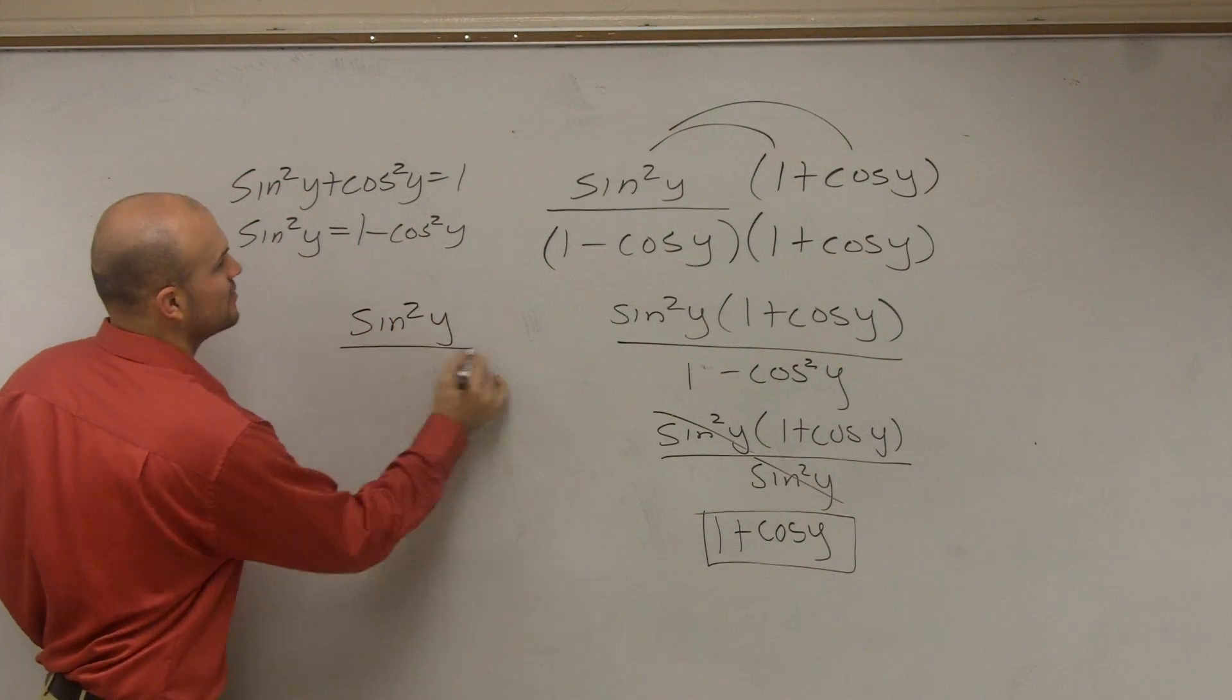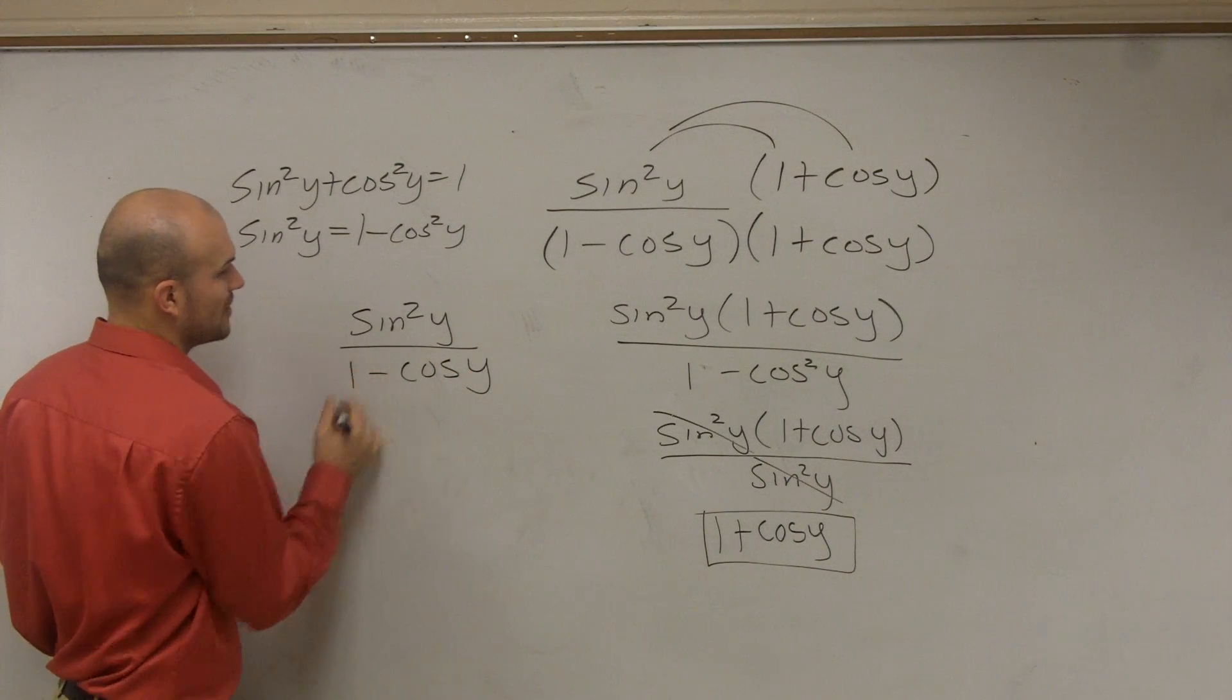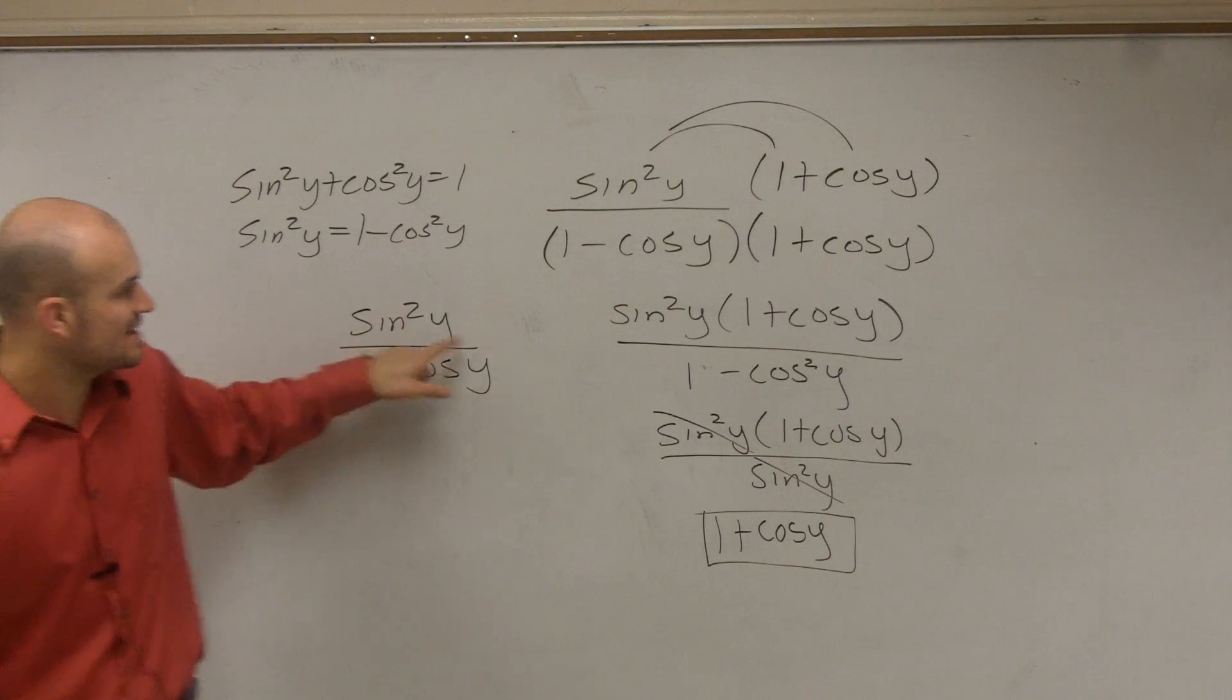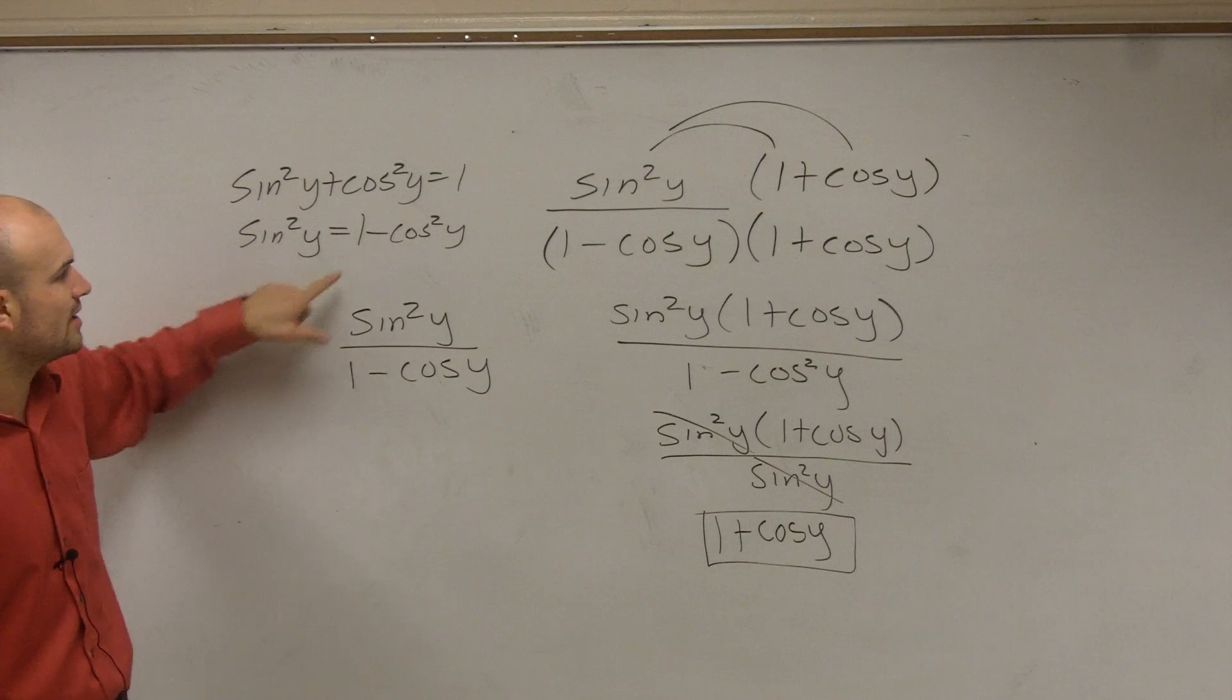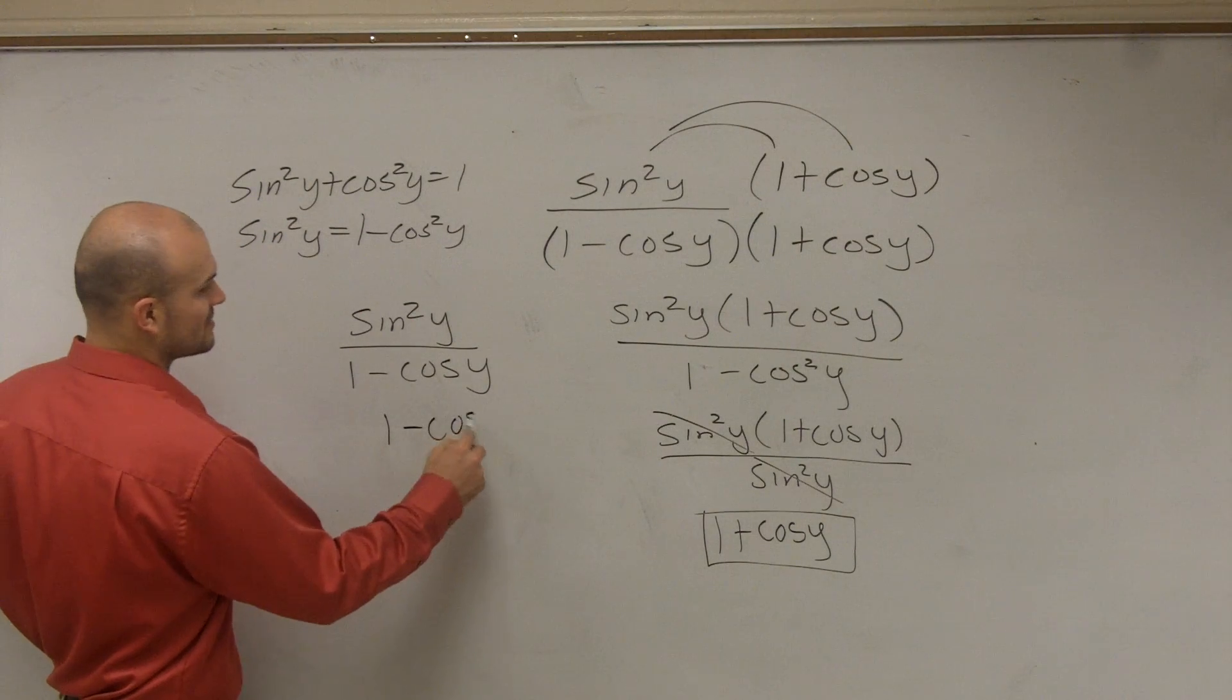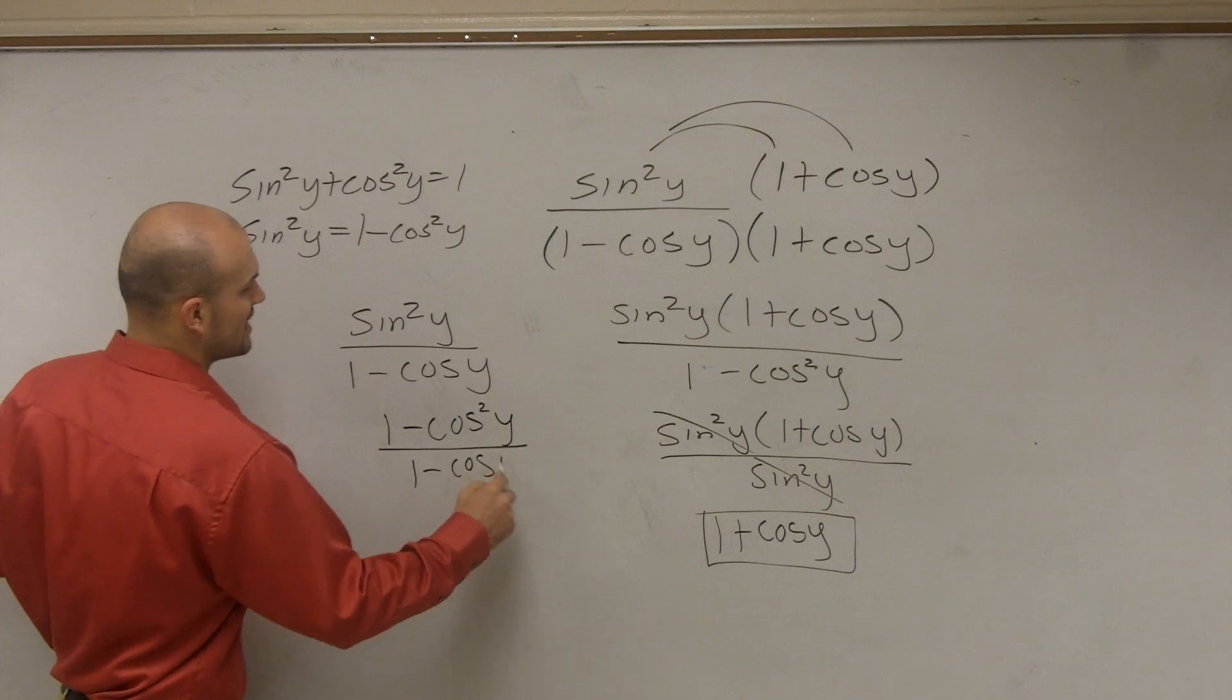So, we have sine squared of y over 1 minus cosine of y on the bottom, right? Can we rewrite sine squared? Yeah, we talked about sine squared is the same thing as 1 minus cosine squared of y. When you solve for sine squared, it equals that. So, therefore, I rewrite that as 1 minus cosine squared of y all over 1 minus cosine of y.